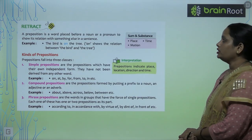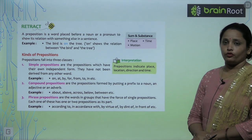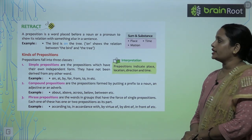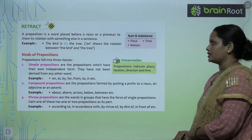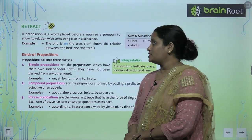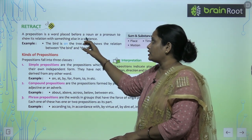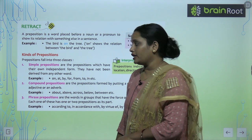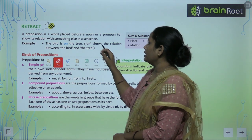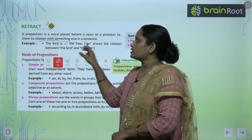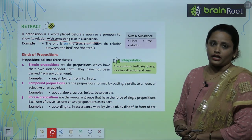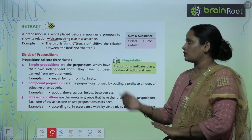A preposition is a word placed before a noun or a pronoun to show its relation with something else in the sentence. So preposition kya hota hai? Yeh ek word hota hai jisse place kiya jata hai — rakha jata hai before a noun, ya phir pronoun se pehle — to show its relationship with something else, kisi aur ke saath jodhta hai sentence mein.